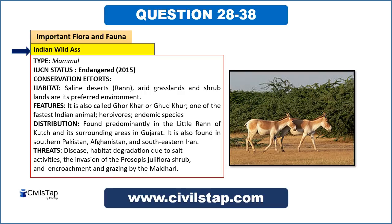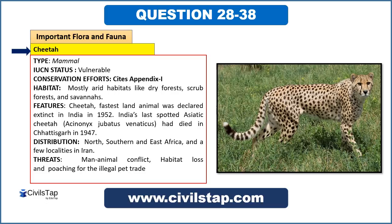The cheetah is the fastest land animal in the world, but it was extinct from India by 1952. Globally, it is classified as vulnerable by IUCN and is still found in North, South, and East Africa and a few localities in Iran. The main reasons for its decline are habitat loss and habitat fragmentation.